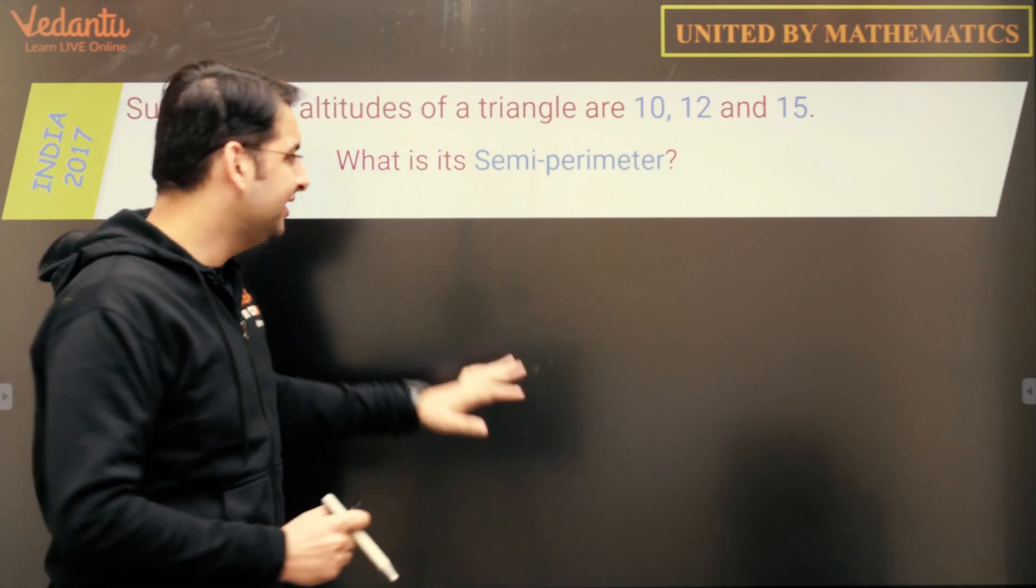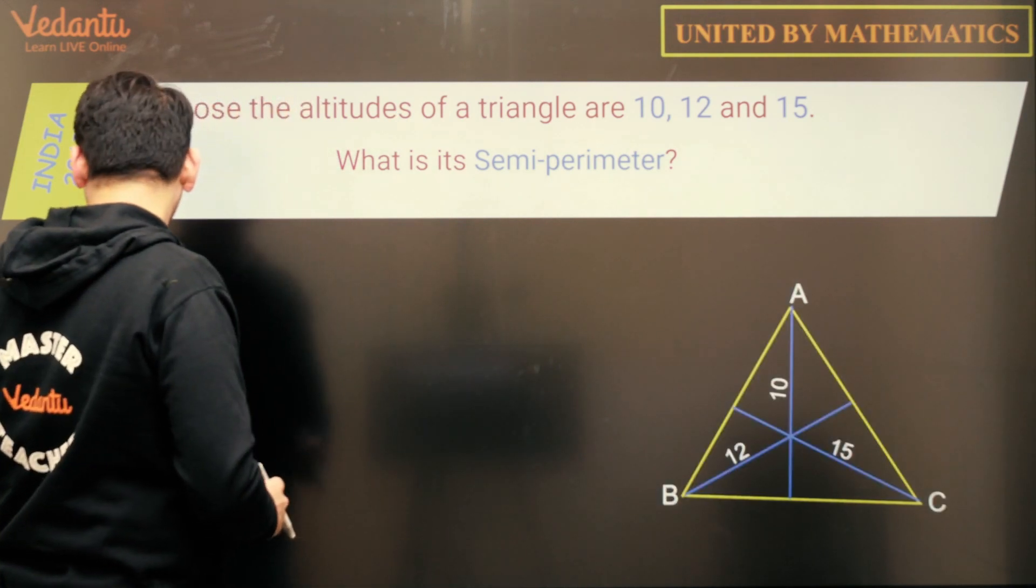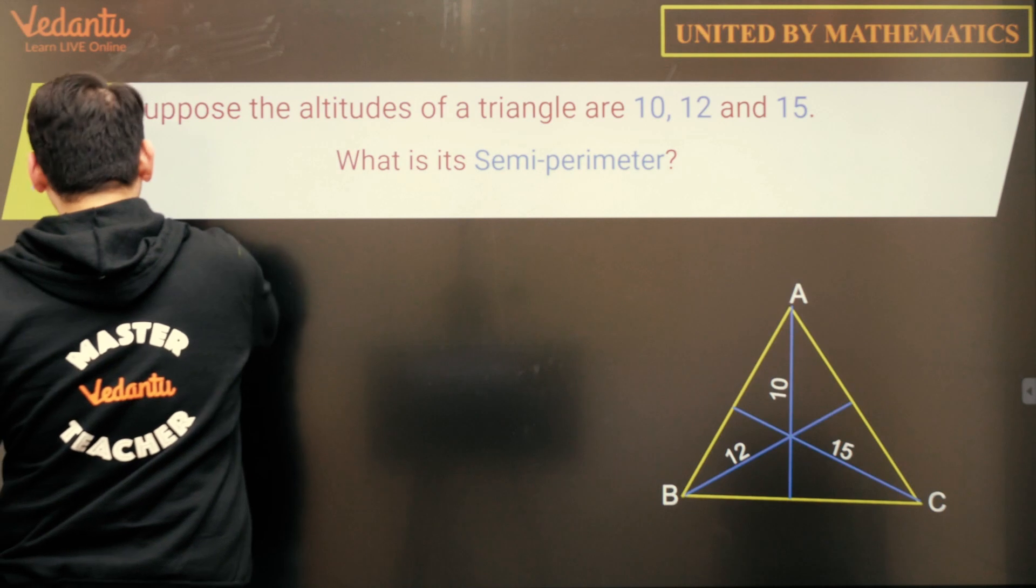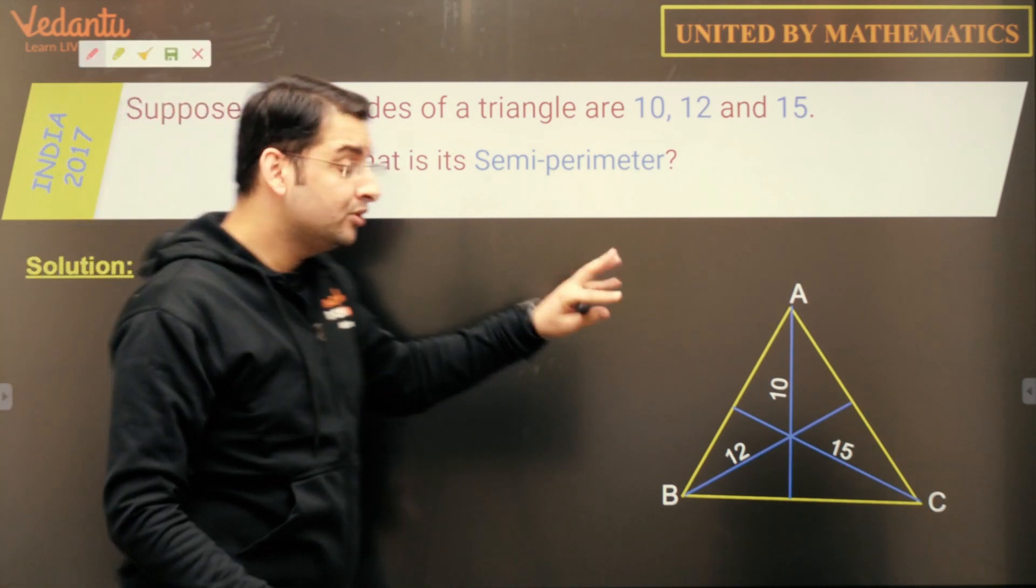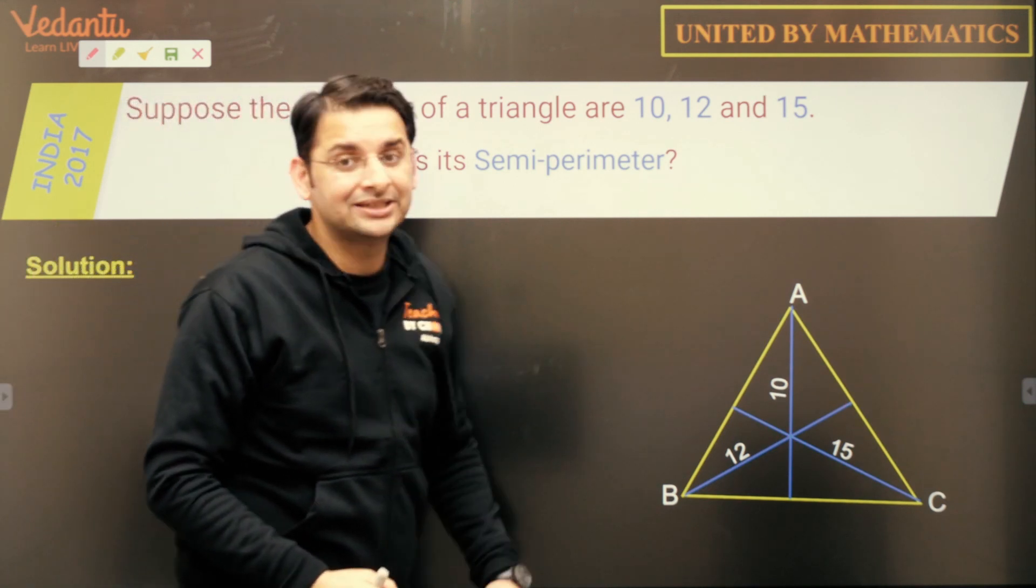So how do we do this? Let us draw the diagram which looks like this in this case and see how the question will be done. So we'll make use of the fact that the area of the triangle is half base height.